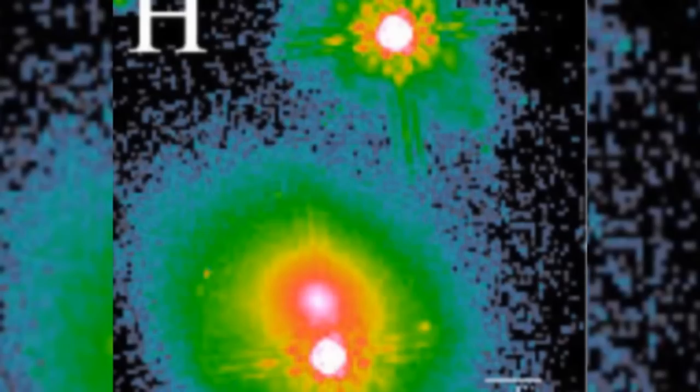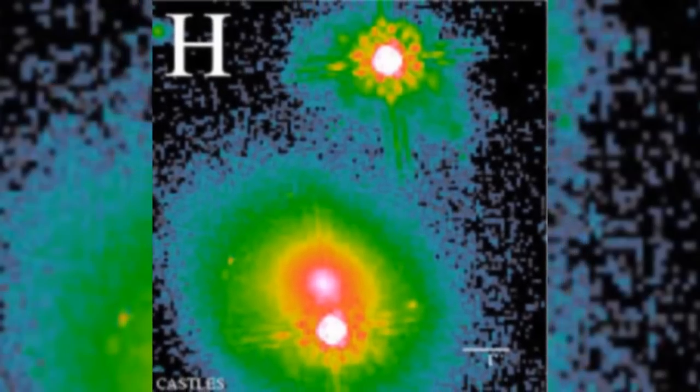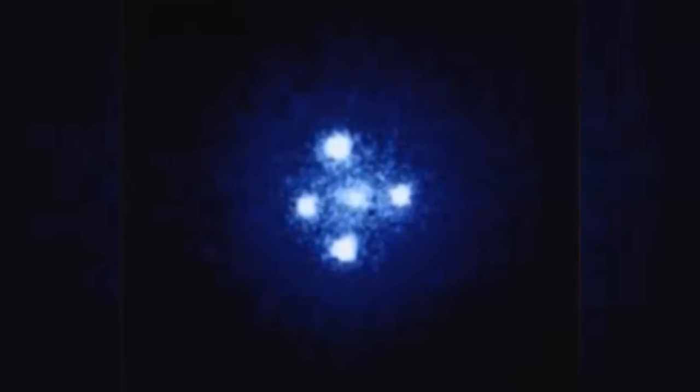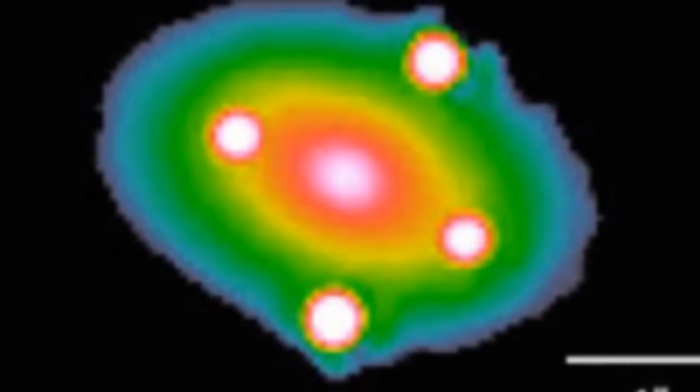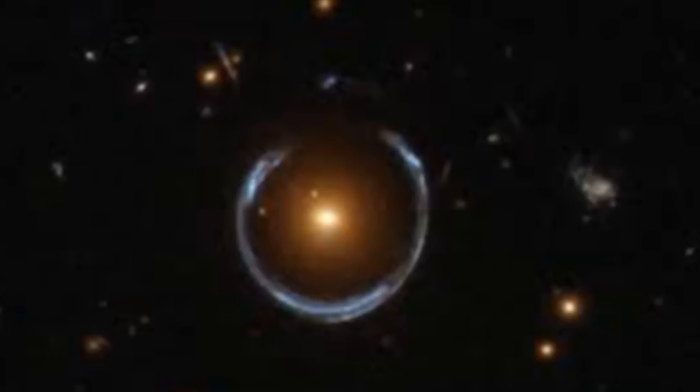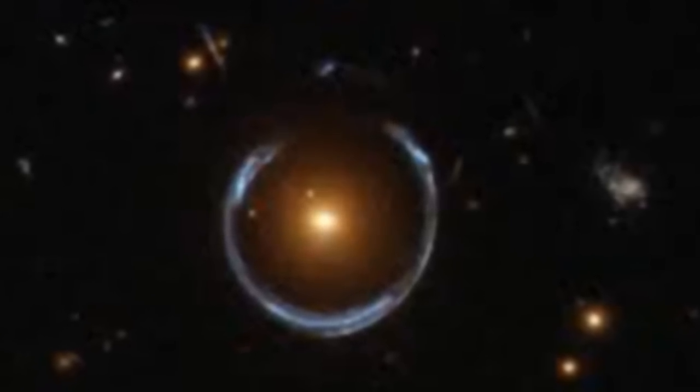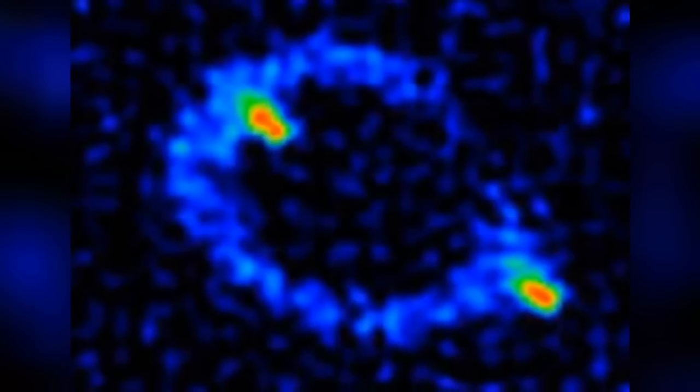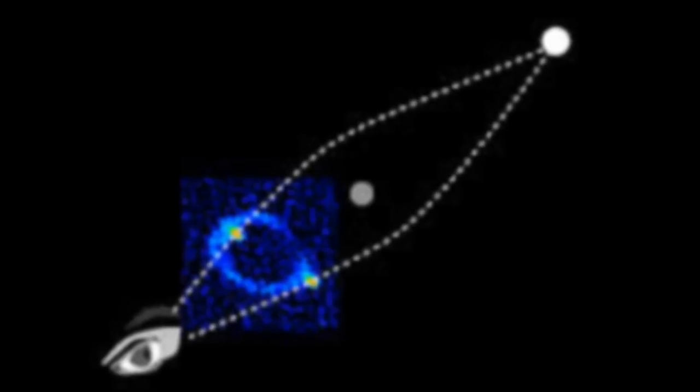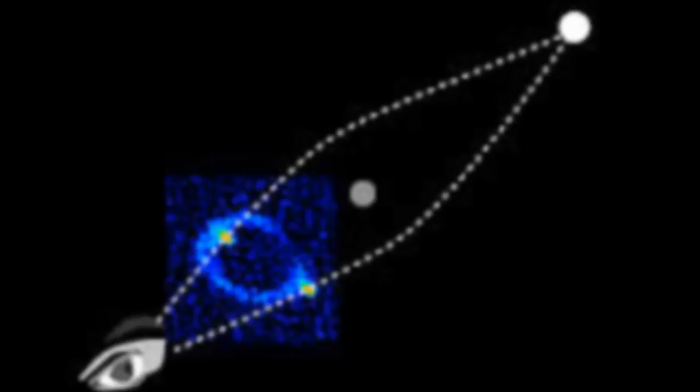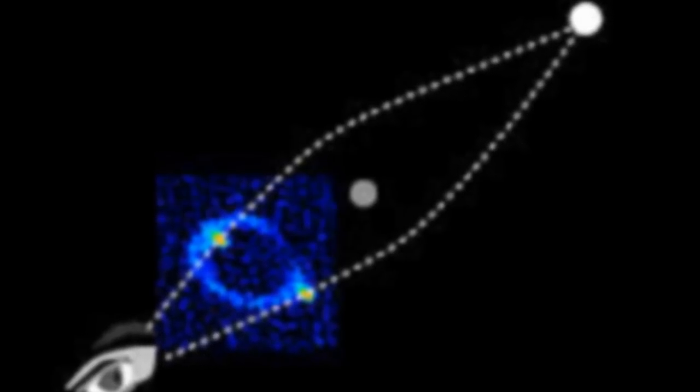In 1979, telescopes observed Q0957-561. What initially appeared to be two quasars turned out to be a double image of one quasar. In 1985, QSO2237-0305 was observed, this time in a quadruple image known as an Einstein cross. In 1987, MG11310456 was observed, which was one of the first of what came to be known as an Einstein ring. All of these are the result of the same phenomena, the difference being a result of the distance and shape of the intervening gravitational source.